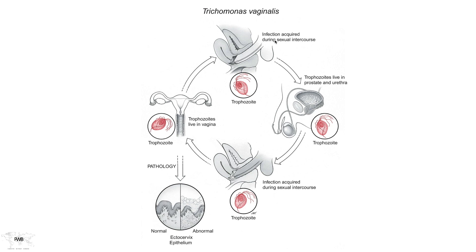The infection begins by transferring from a male to a female via sexual intercourse. The organism is introduced in the semen and exists as a flagellated trophozoite. Unlike Giardia lamblia, which has both a cyst and trophozoite stage, we've never discovered a cyst stage for Trichomonas vaginalis — there is only the trophozoite stage. Perhaps it was lost in evolutionary history. One other, much rarer, route of transmission is passage through the birth canal during birth from an infected mother.